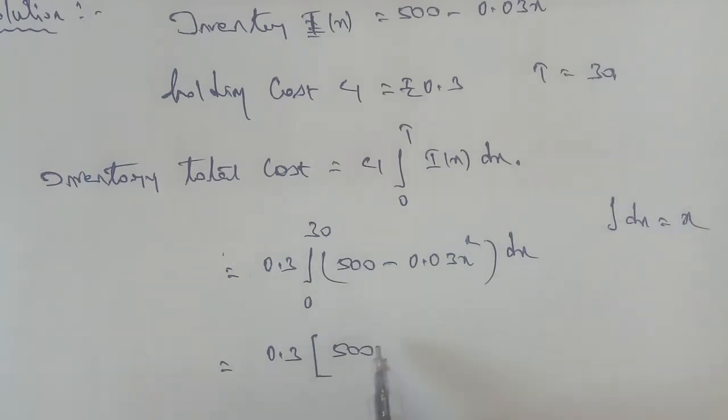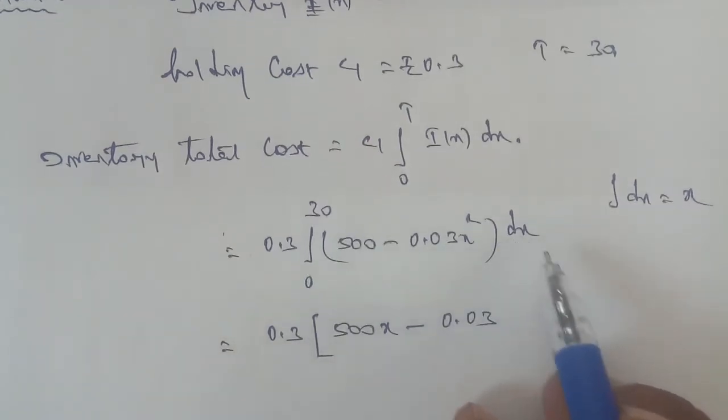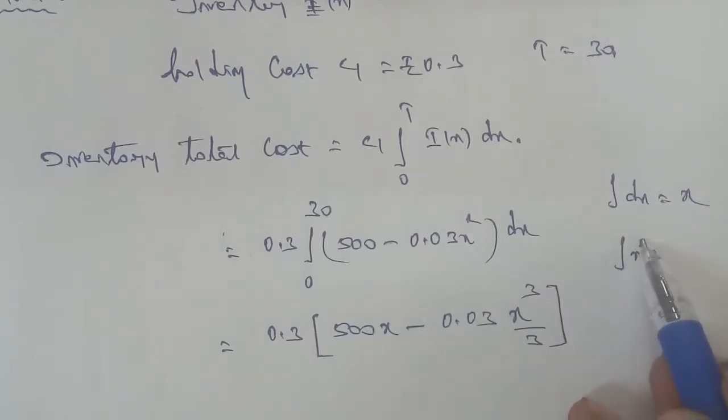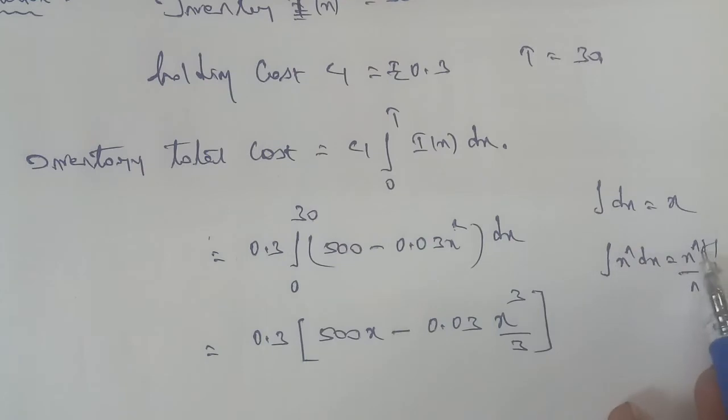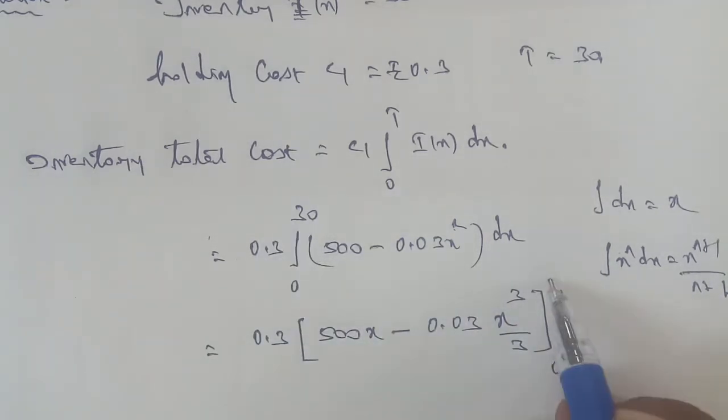Equal to 0.3. For X², the formula is X^(n+1)/(n+1). The n value here is 2, so X^(2+1)/(2+1), which gives X³/3. Now applying the limits 0 to 30.